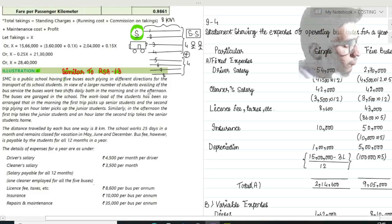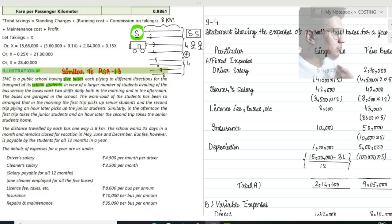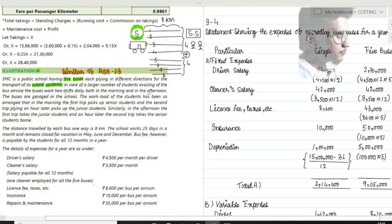SMC is a public school having five buses, each plying in different directions for the transport of school students. In view of a larger number of students availing of the bus service, the buses work two shifts daily, both in the morning and in the afternoon.